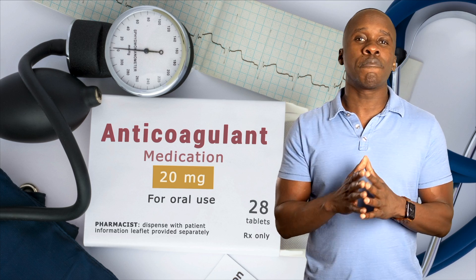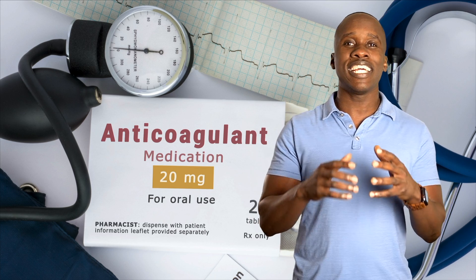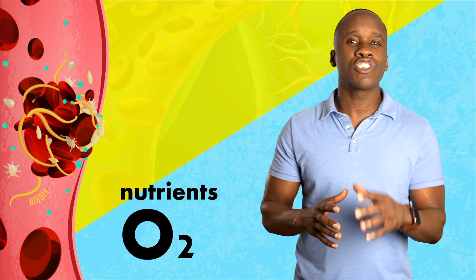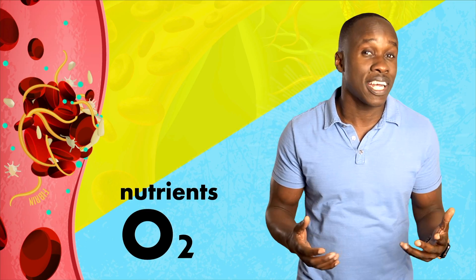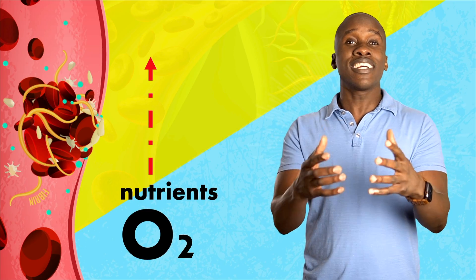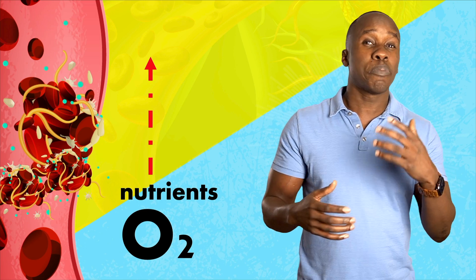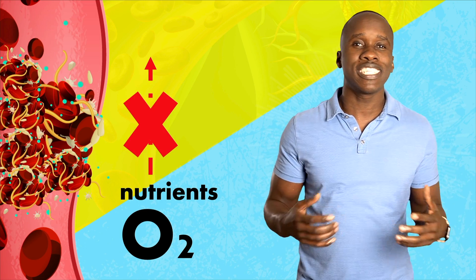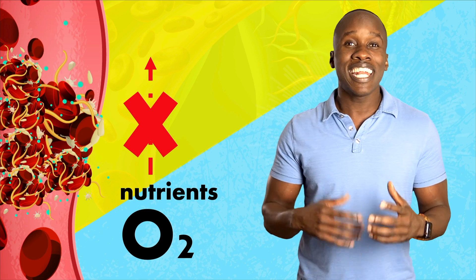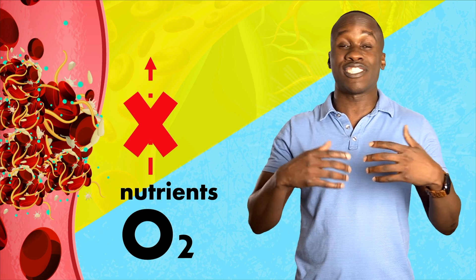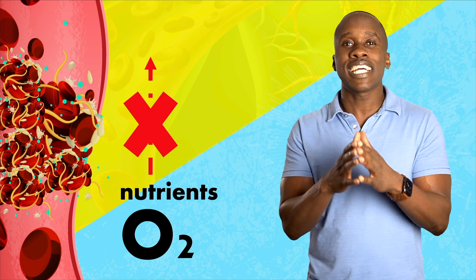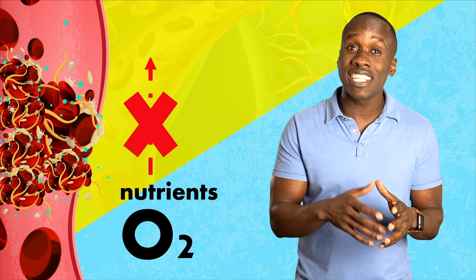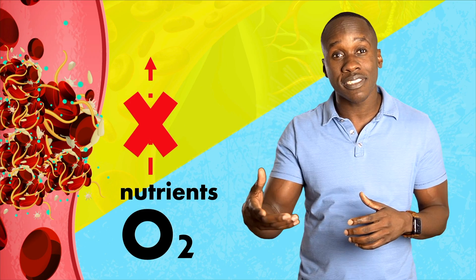The first type of medication that we're gonna look at is anticoagulant drugs. These are drugs that are used to decrease clotting. When there's excess clotting, that can block blood vessels. It can cut off oxygen and nutrient delivery to different tissues, and it can lead to a stroke. Anticoagulants help to decrease clotting by preventing the formation of new clots.